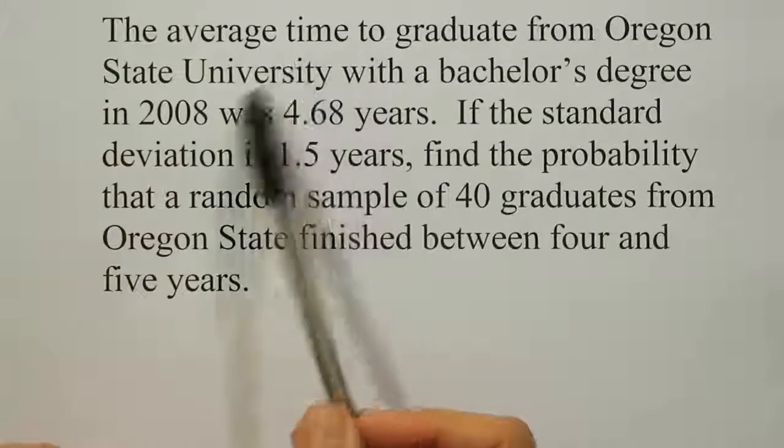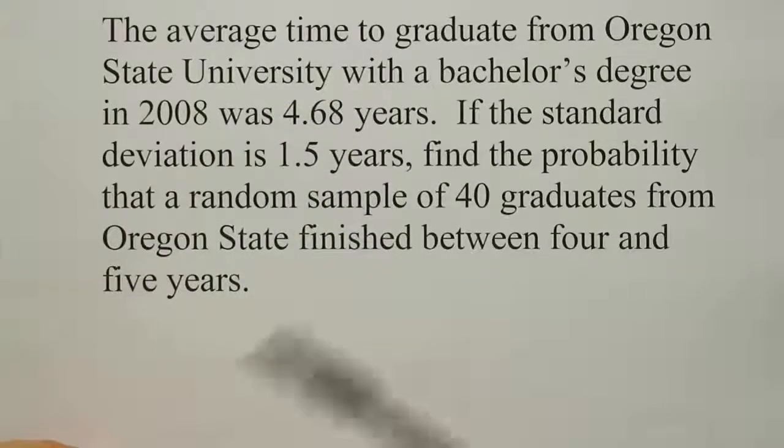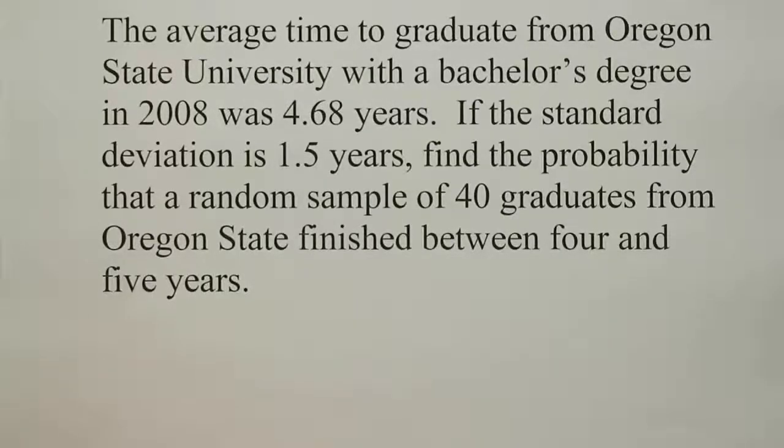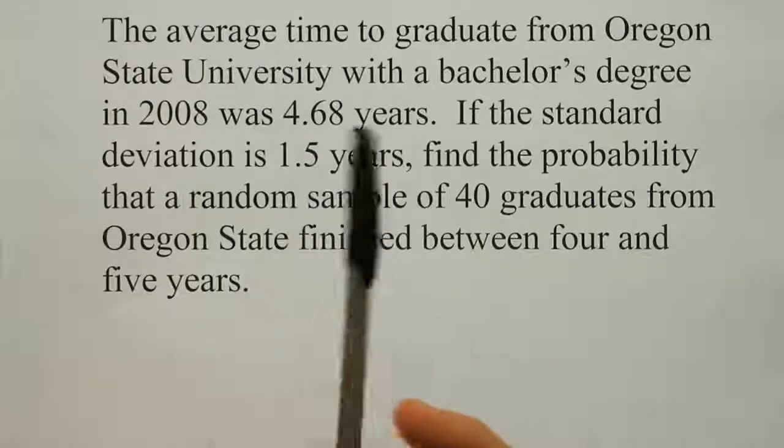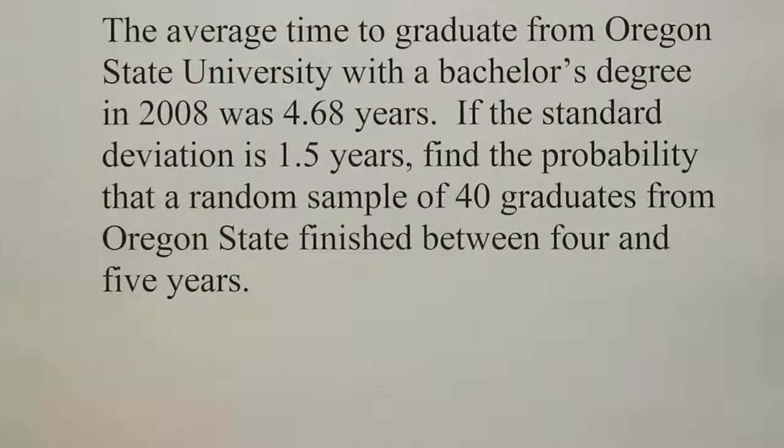What we're about to do is actually use the bell curve to solve the problem because I'm going to assume that this sample size of 40 is large enough to assume the central limit theorem kicks in. We'll be able to say that the sample mean completion time for these 40 people has a normal distribution. So we're going to use that mean of 4.68 years, that standard deviation, and the sample size of 40 to solve the problem using a bell curve.